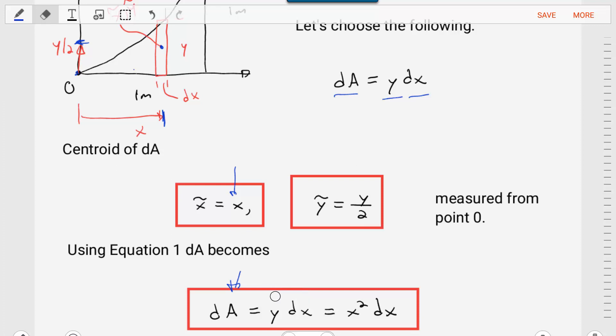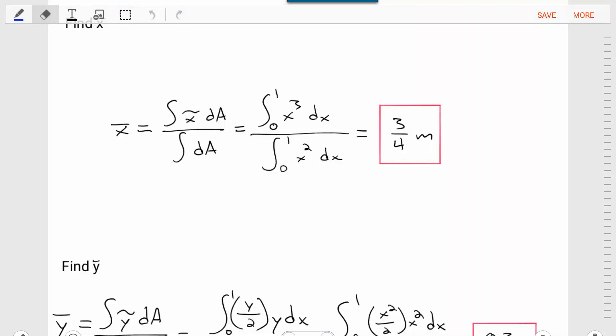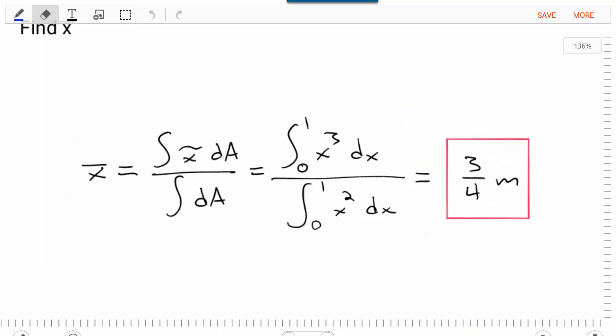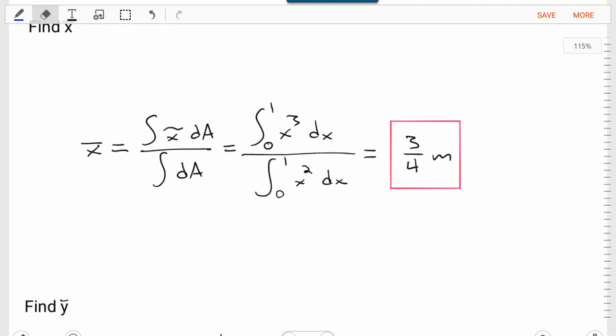Now that we've figured out those unknowns, we can move into doing the calculus. We'll start with finding our X bar. We take the given equation and plug in our DA and X tilde. We'll end up with the integral of X cubed DX from zero to one meter divided by the integral of X squared DX from zero to one. We perform our integration and find that X bar is equal to three over four meters.